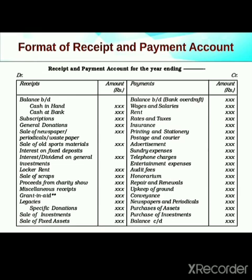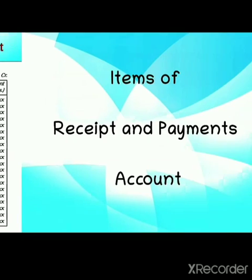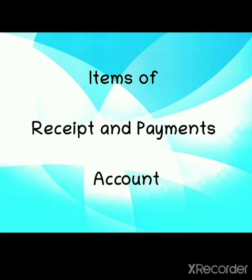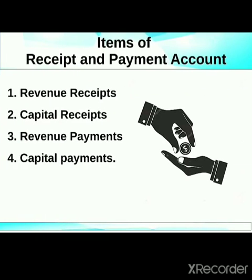Receipt is on the debit side and payment is on the credit side. The receipt and payment account shows all items on both sides. Items of receipt and payment account: the debit side includes revenue receipts or capital receipts, and the credit side includes revenue payments or capital payments.